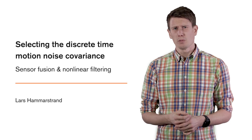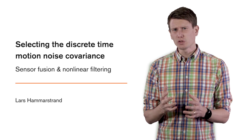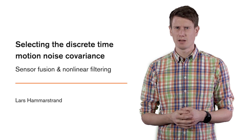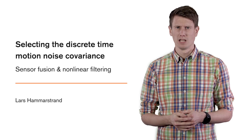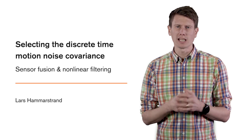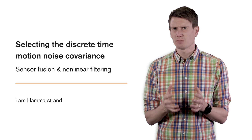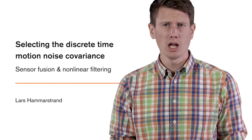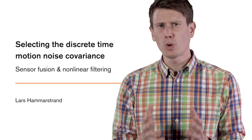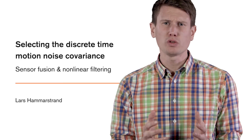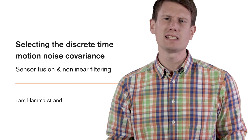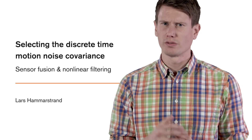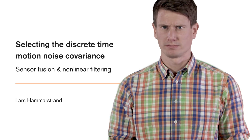In the previous video, we considered how to discretize a continuous time motion model and how to select the discrete time transition matrix. In this video, we'll instead focus on how to select the discrete time motion noise, and in particular, its covariance matrix.